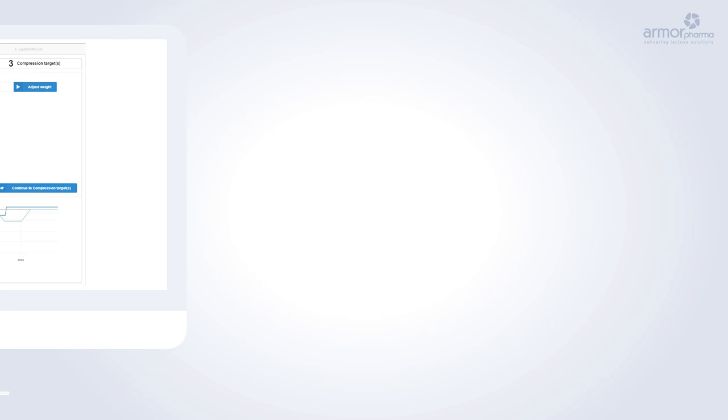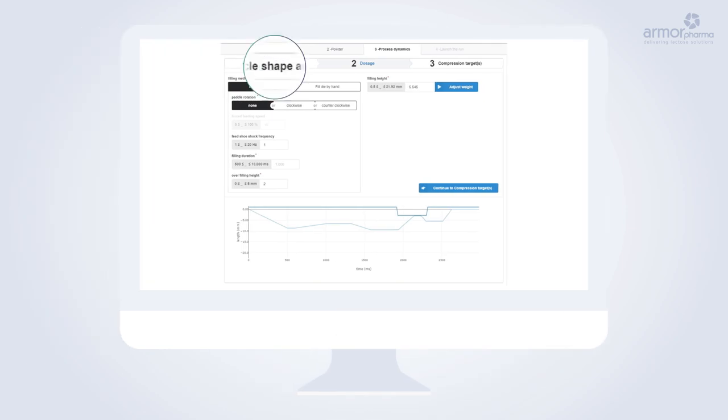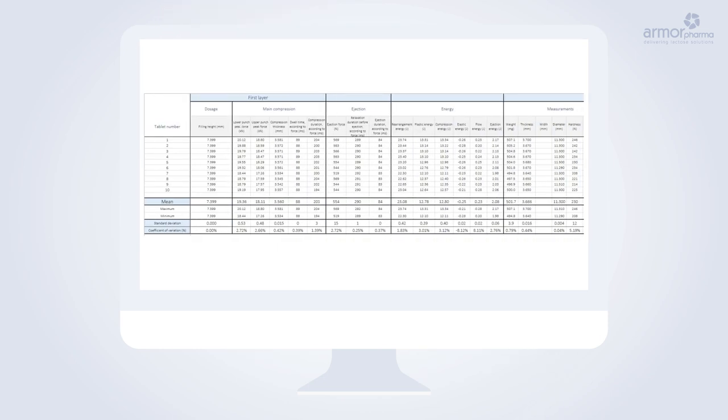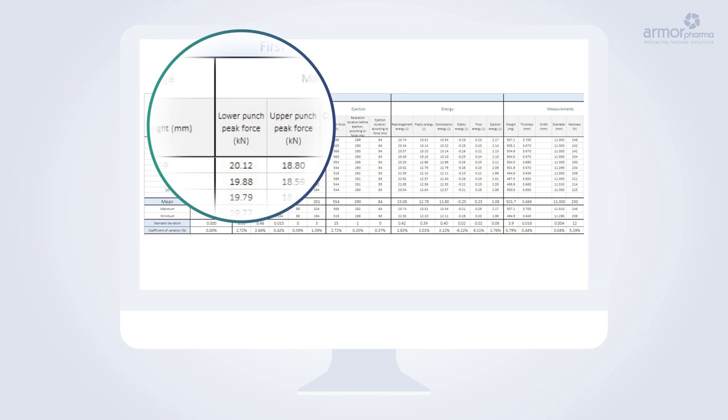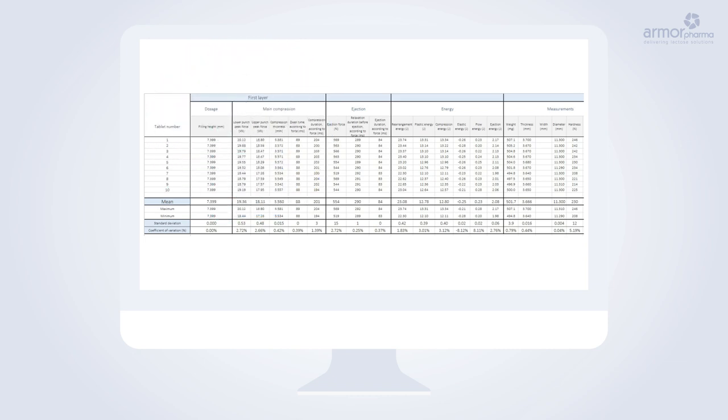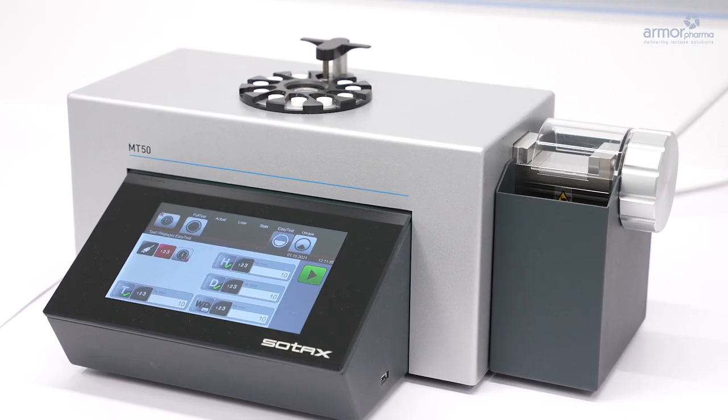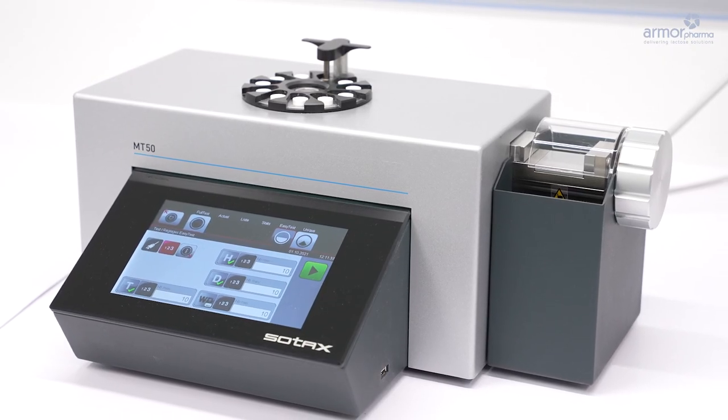The aim is to study the influence of process parameters such as compression force and compression speed on the properties of a formulation. The press is entirely controlled by software allowing automatic data transfer. It also is integrated with all the other equipment to obtain a full set of data of each compaction test.